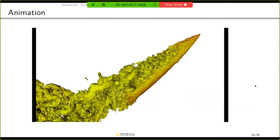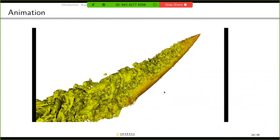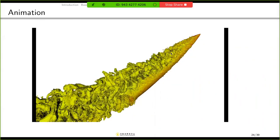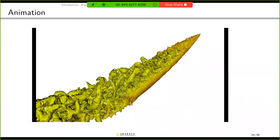And this is the animation of Q criterion. And we can see the detailed vortical structure in the wake region.